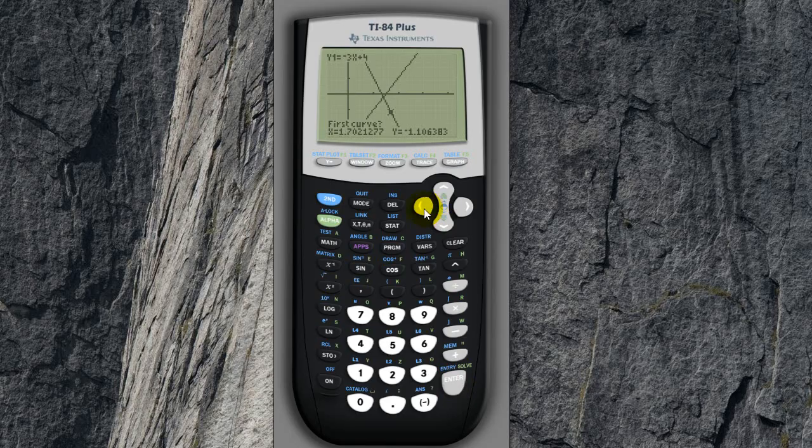And now let's select the first curve. So the first curve can either be this line or this line. So you can press the up and down arrows to select whichever line the first line is. And press enter again. And now it wants the second curve. So it will obviously be this line here. Press enter again.